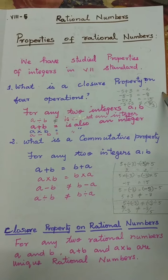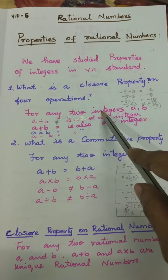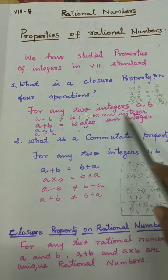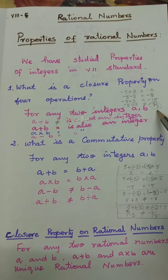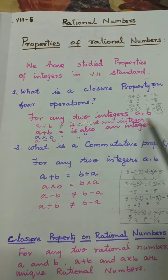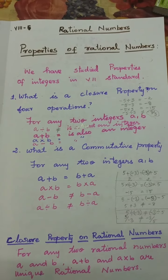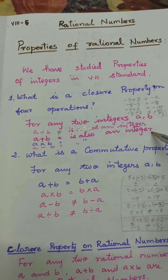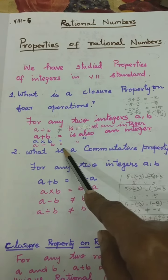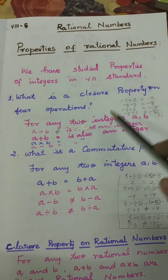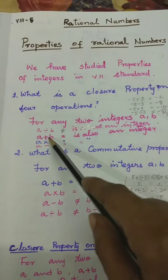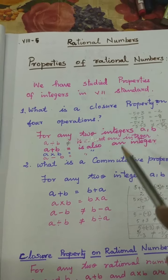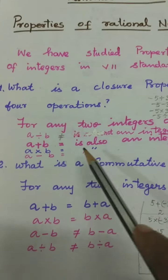What is the closure property on 4 operations? We are using how many integers here? For any two integers A and B, A plus B will give some answer, and that answer is also an integer. Then A minus B gives some answer, and that answer is also an integer. Then A into B, multiplication gives some answer, and that answer is also an integer.